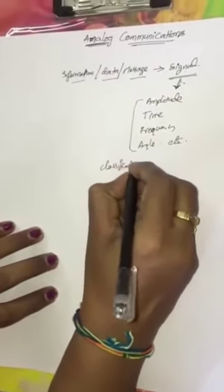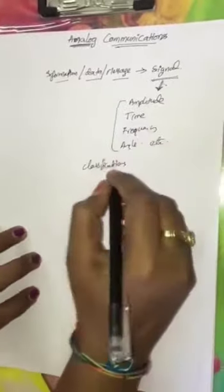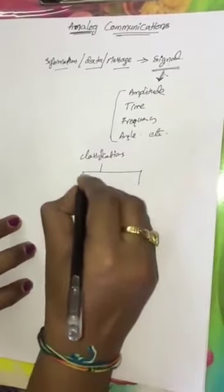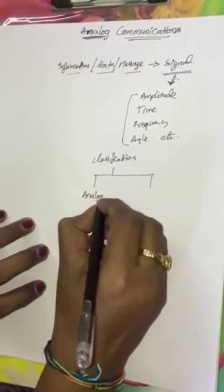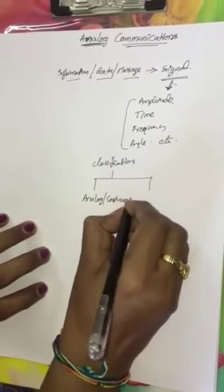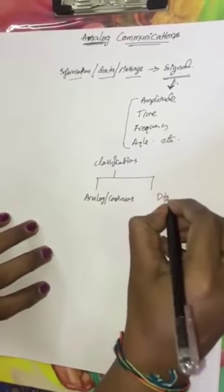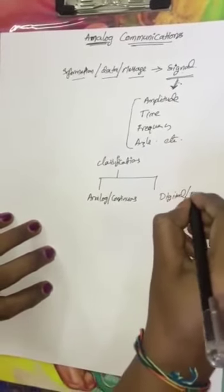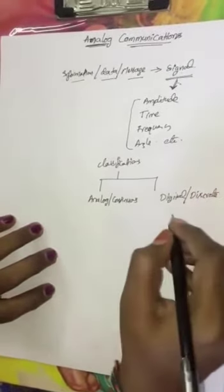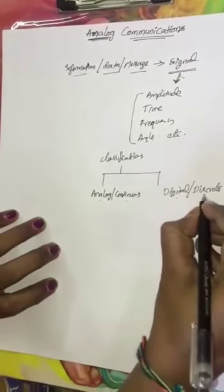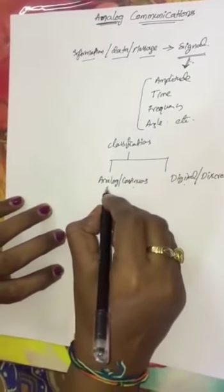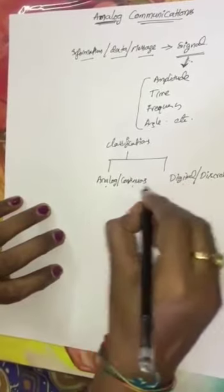What are the classifications of signals? Signals are classified into two basic types: we can consider the first as analog, or we can treat it as continuous. The second one is digital, or discrete. We can call these synonyms of particular signal indications — analog or continuous, digital or discrete.